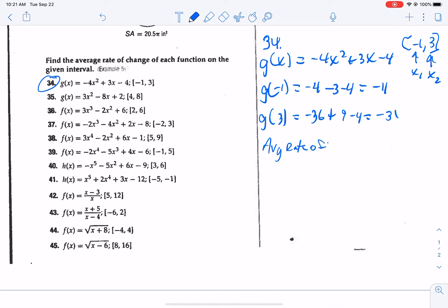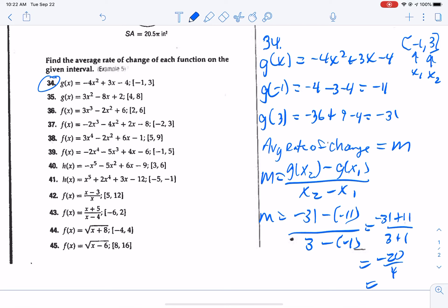Now here is your average rate of change. Your average rate of change is your slope. So the slope between these two points is g of x sub 2 minus g of x sub 1 over x sub 2 minus x sub 1. So in this case, here's our g of x sub 2, negative 31, minus our g of 1, which is negative 11, over 3 minus negative 1. So we get negative 31 plus 11 over 3 plus 1, which is negative 20 over 4, or negative 5. So that's how you're going to find average rate of change for those particular functions.